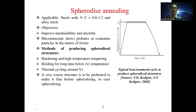The next type is spheroidizing annealing. It is applicable for steel with a carbon content of 0.6 to 1.2 percent and alloy steels. The objective of spheroidizing annealing is improved machinability and ductility. The resulting microstructure shows globules of cementite particles in a matrix of ferrite.